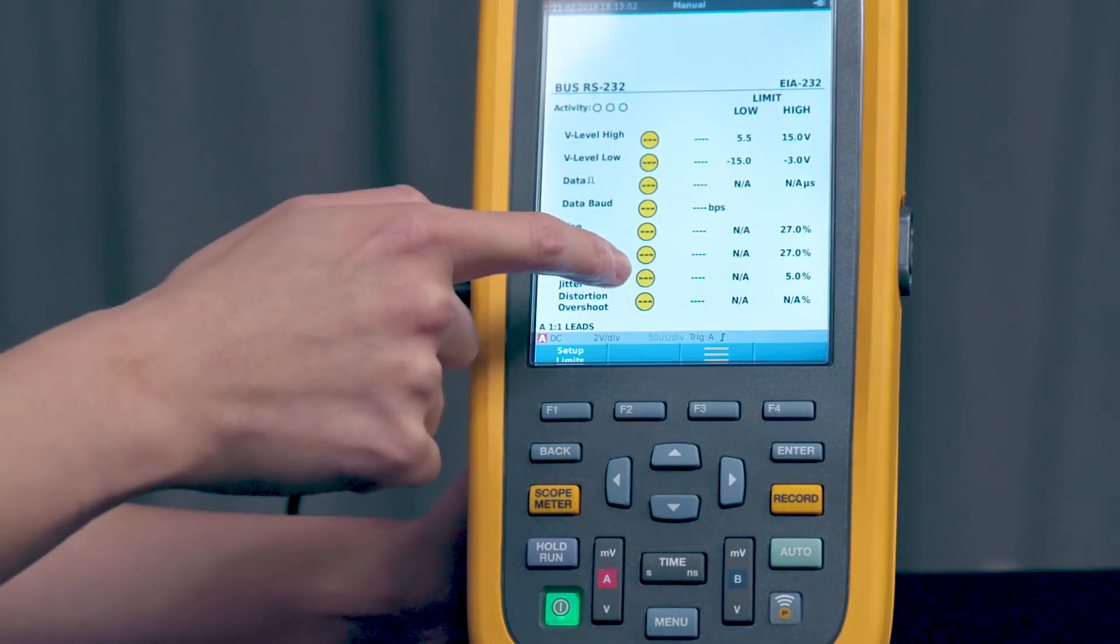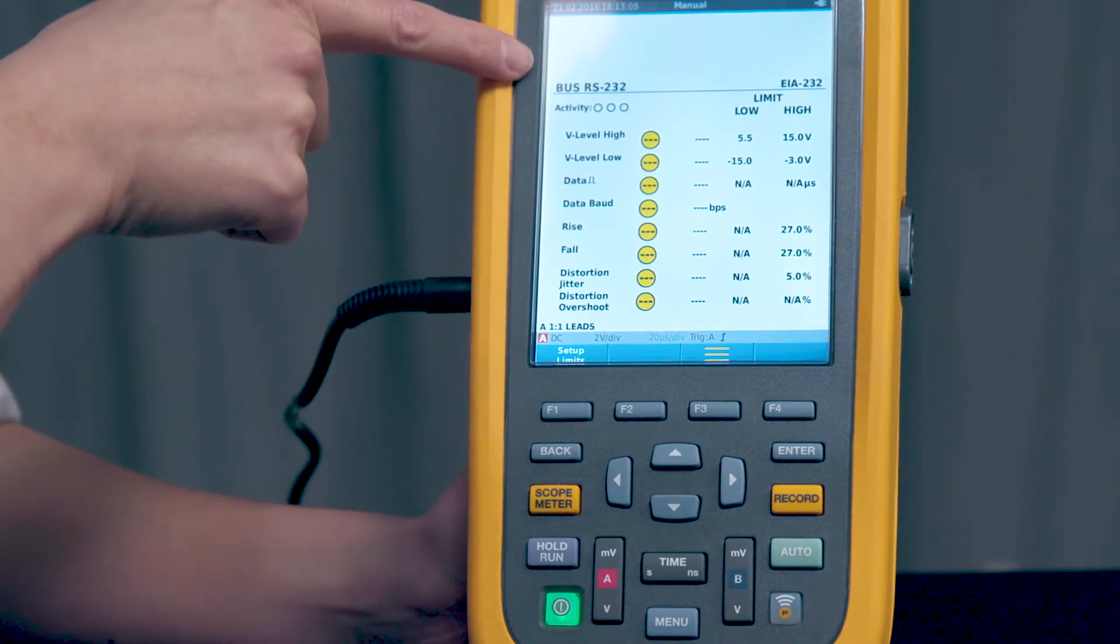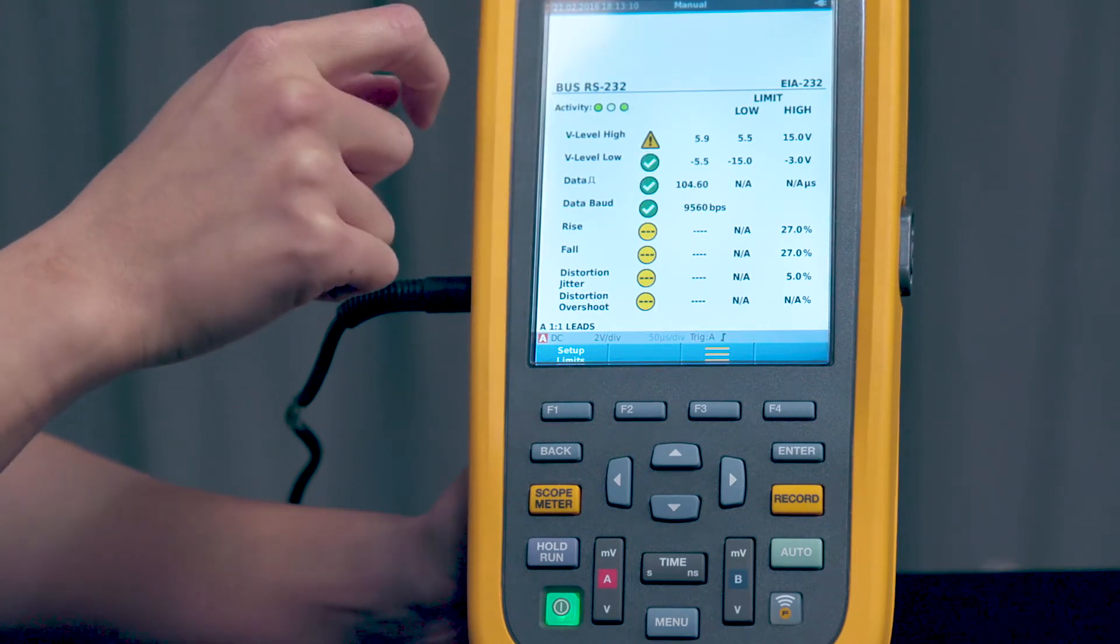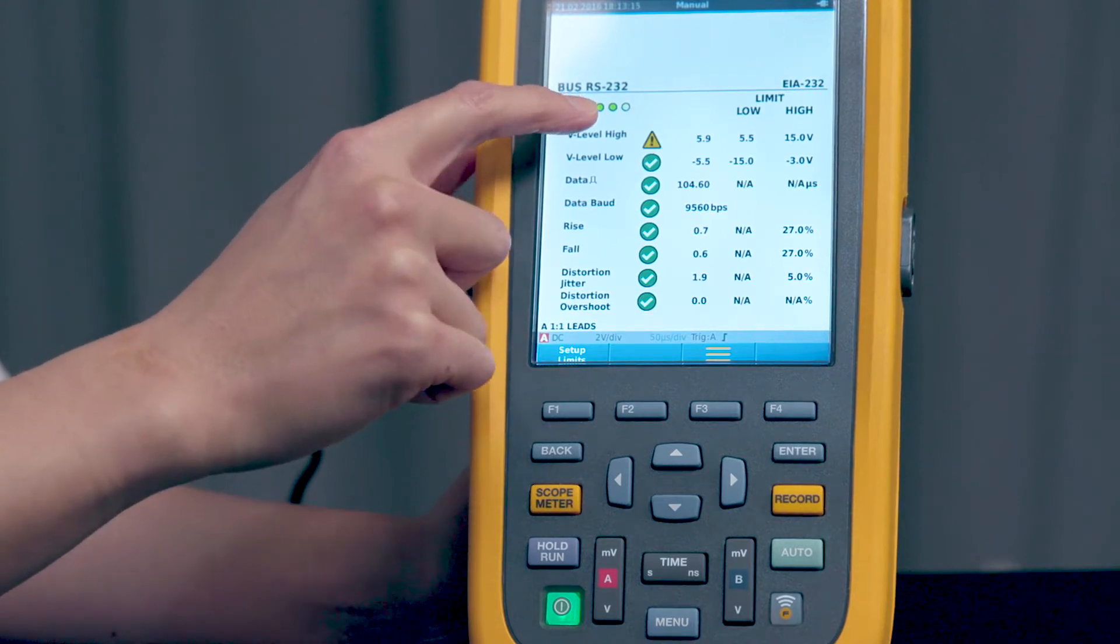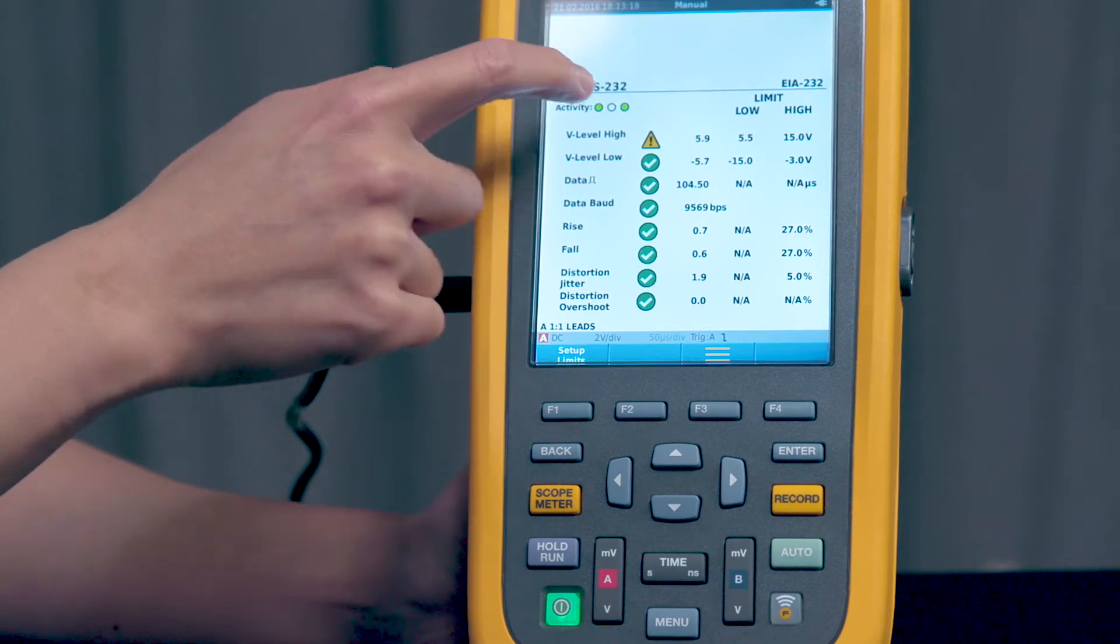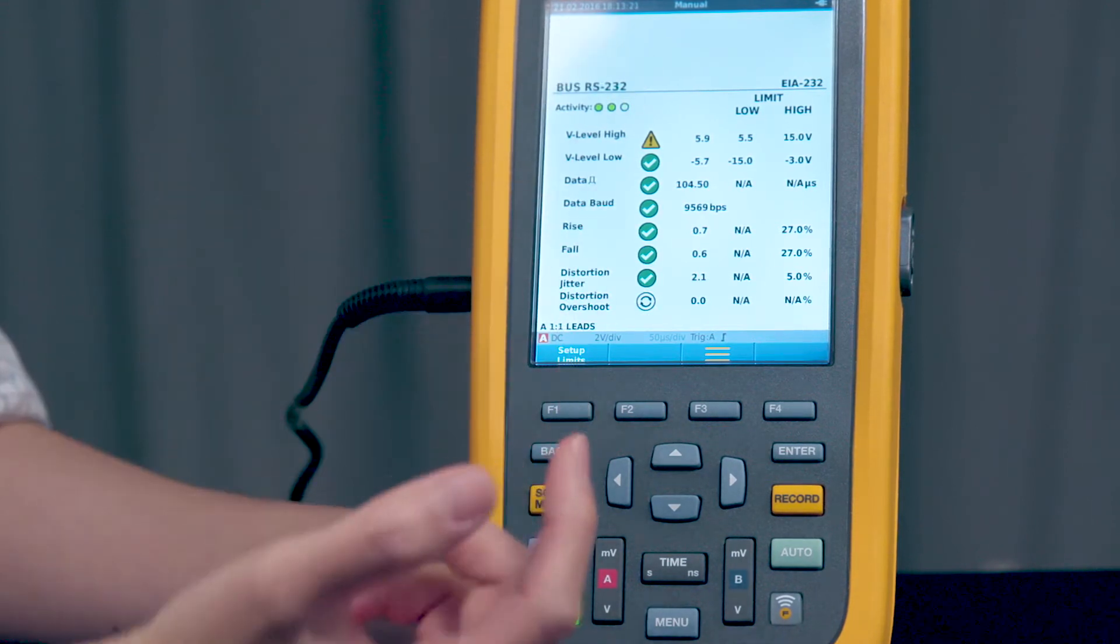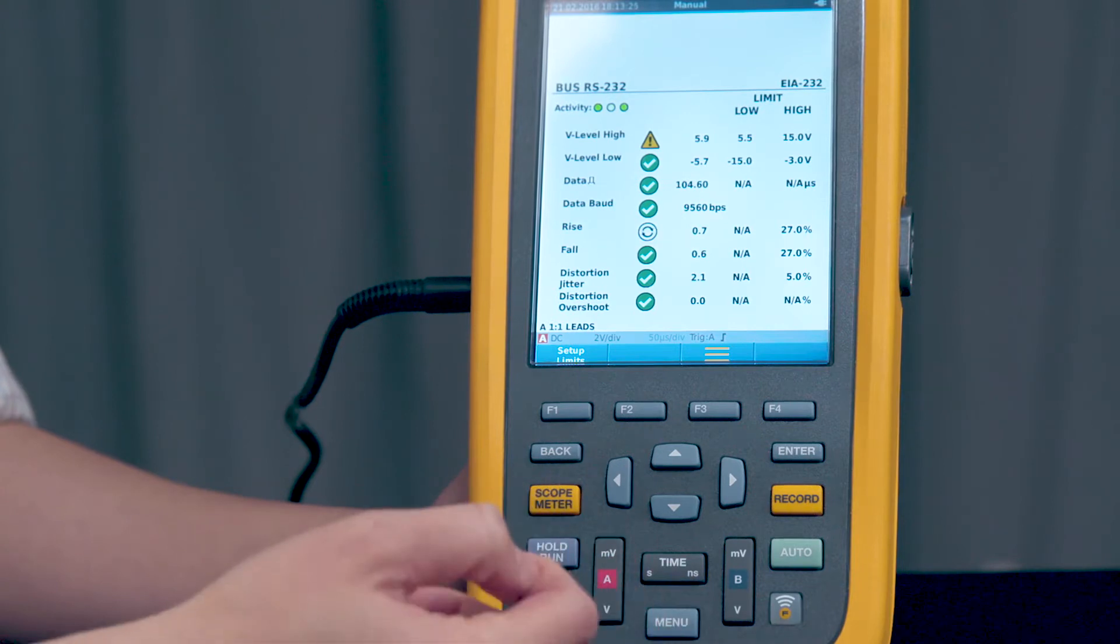You can see here these dash marks indicate that there's no reading at this time. And up here on the left is the communication that you're measuring. And right below it are your activity dots. So the first circle, if it's solid green, means you're measuring a voltage. The second and third circle, if they're blinking between white and green, that means you have activity and communication.